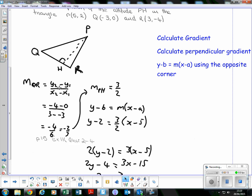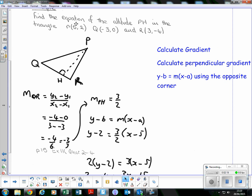The gradient of QR: y2 minus y1 over x2 minus x1. We're given Q and R, so substitute: negative 4 minus 0 over 3 minus negative 3, which is negative 4 over 6, which simplifies to negative 2 over 3. At Higher, you are expected to simplify a fraction if possible. If you don't, you will lose a mark.